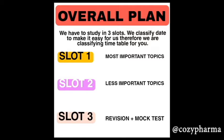We'll start with the overall plan. We have to study within three slots. When we classify data it's very easy to learn, so we're classifying our timetable for a systematic approach. Slot one: most important topics. Slot two: less important topics. Slot three: revision and mock tests. If you are able to cover slot one and slot three along with abundant mock tests — maybe 15 to 20 — that would be good enough to qualify and get a very good rank.